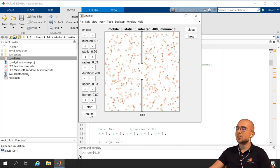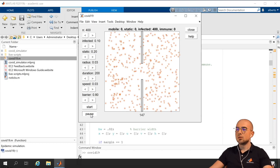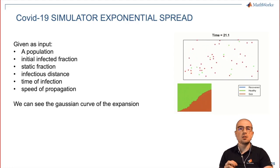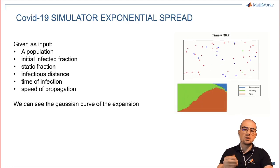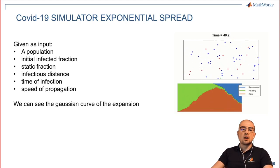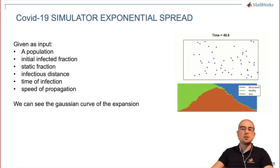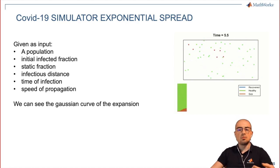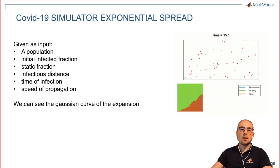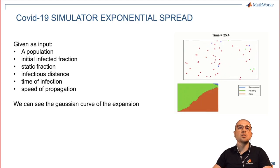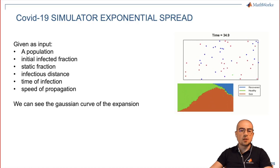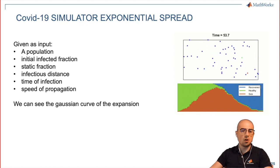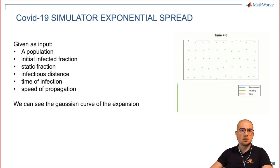Let's move back to the slides and discuss the second simulator. This time the simulator has a slightly different behavior. As you can see in the slide, we have in the top corner the interaction between the different particles that simulate the population, and below it the Gaussian form showing how the expansion goes. Again, as input of the simulator, we give the population, the initial infection fraction, and so on, and the simulator computes the interaction.